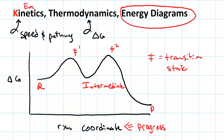From the graph we can tell the activation energy — that's the hump you have to get over to reach the transition state. Think of that as the amount of energy needed to break bonds. That's the activation energy of the first step, and here's the activation energy of the second step. Just looking at this graph, we can see the activation energy of the second step is greater, so step two is going to be our rate-limiting step.